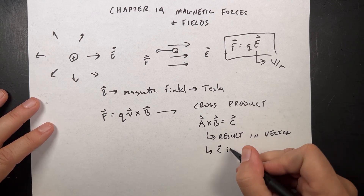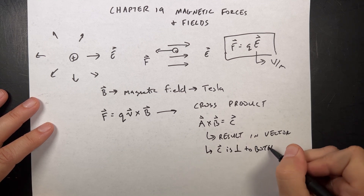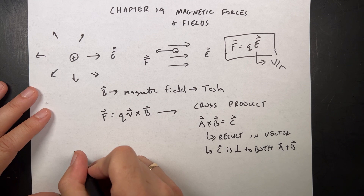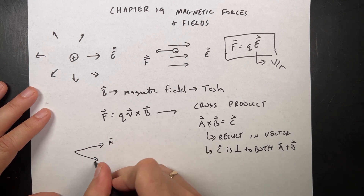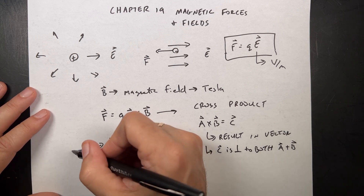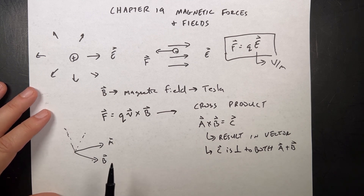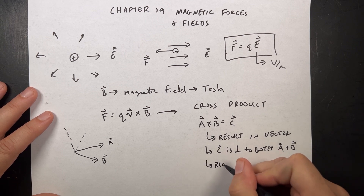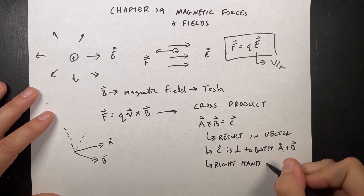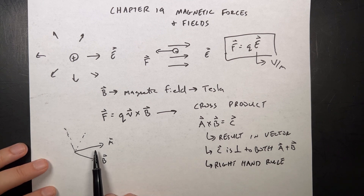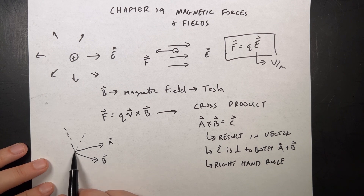Number two: the vector C is perpendicular to both A and B. That's kind of crazy — if I have vector A here and vector B here, what vector is perpendicular to both? It could be this way — but that's not perpendicular to B. It could be perpendicular to B — but that's not perpendicular to A. So there are actually two answers. A lot of times we're going to represent vectors in and out of the paper like this: into paper looks like an X — you're looking at the back end of the arrow — and out of paper looks like a dot, which is the point of the arrow coming toward you.